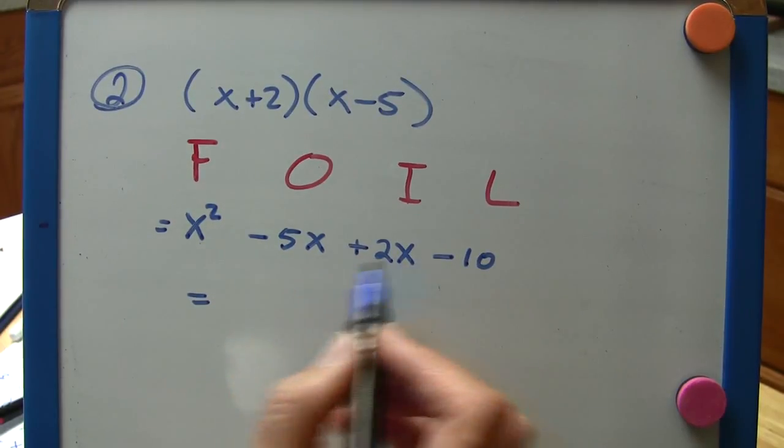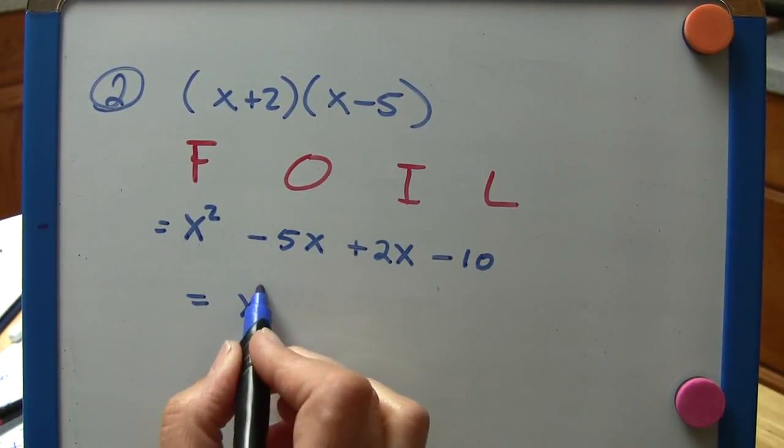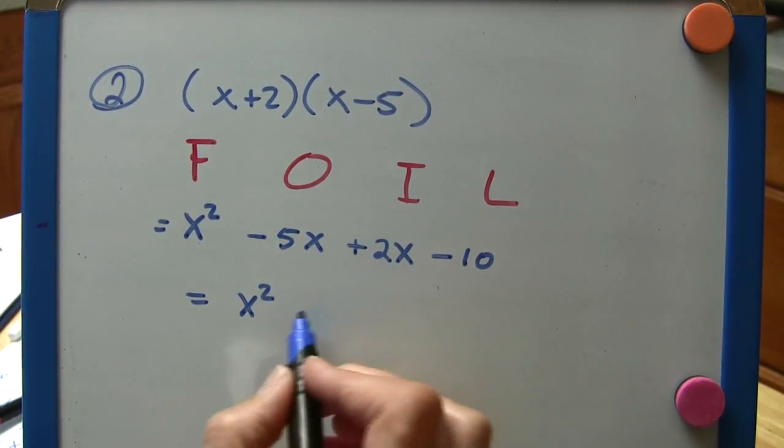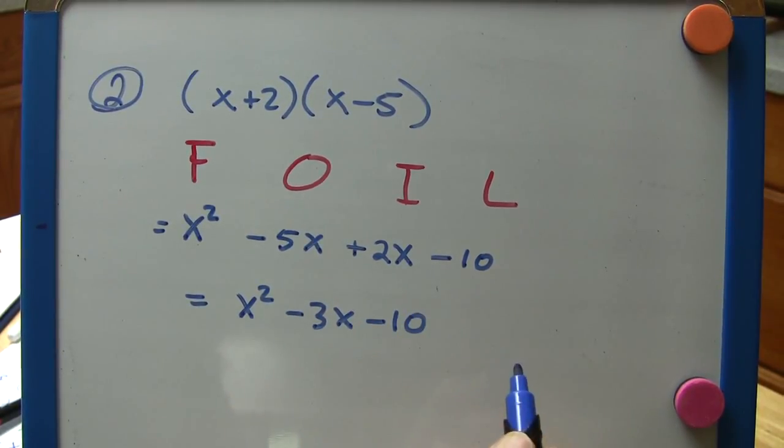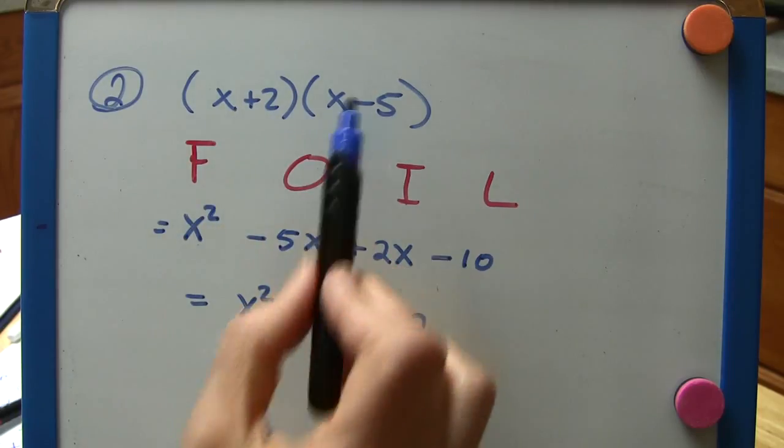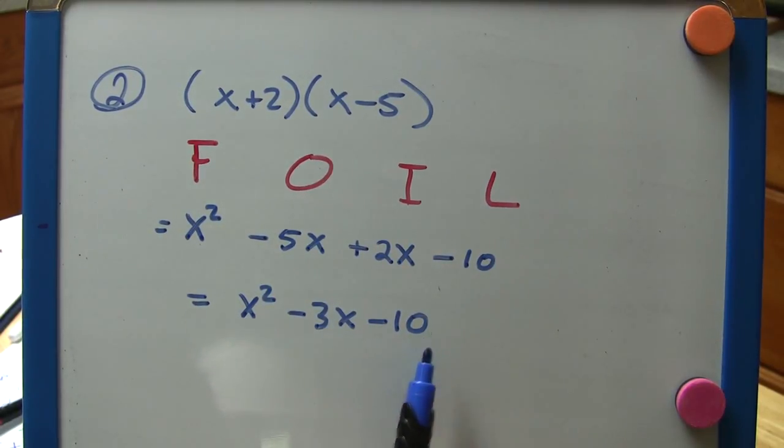So let's combine these middle terms here. The x squared comes down. Minus 5x plus 2x is minus 3x, and minus 10. So if we FOIL these two binomials, we get x squared minus 3x minus 10.